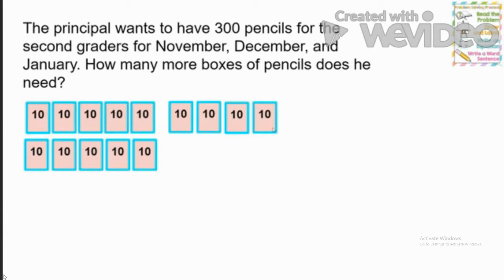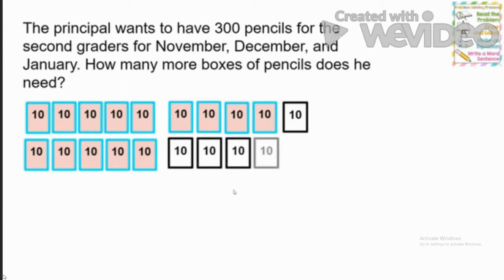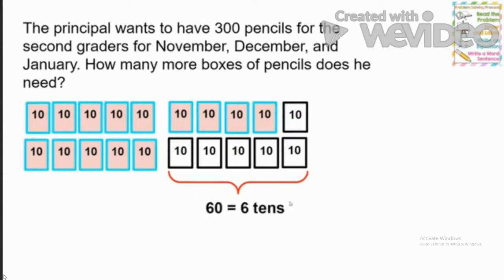Let's keep counting by tens until we get to 300. Count along with me: 140, 150, 160, 170, 180, 190, 200. We're at 200! I added 60 pencils in six groups of tens — that's six tens.